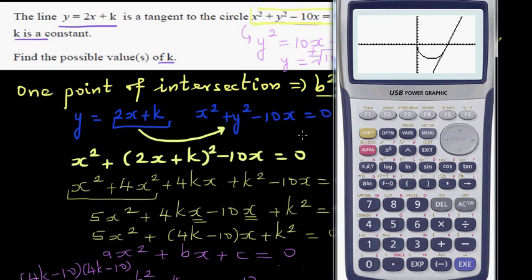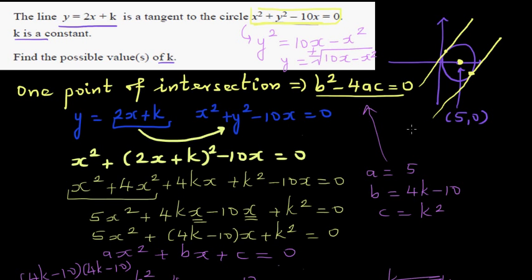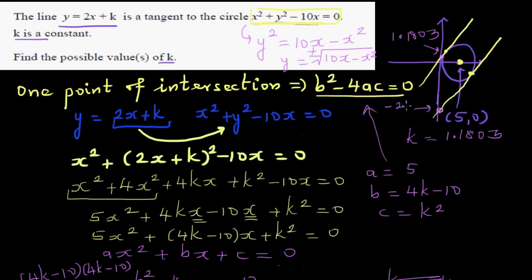So the two possible values of k are plus 1.1803, which is the tangent to the upper circle, and minus 21.1803, which is the tangent to the lower circle. These two lines are parallel because they have the same gradient, but the y-intercept changes.